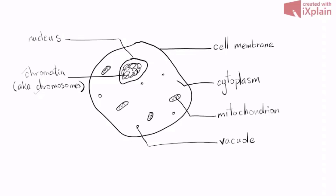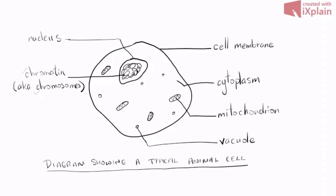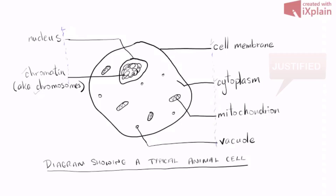The last thing we do is put a title — notice it's all capital letters and underlined. If you check back with the list of rules for biological drawings, you will see this drawing follows all the rules. Notice that when I put my label lines, they all line up on either end — that's what's called justified. And that's your drawing of a typical unspecialized animal cell.